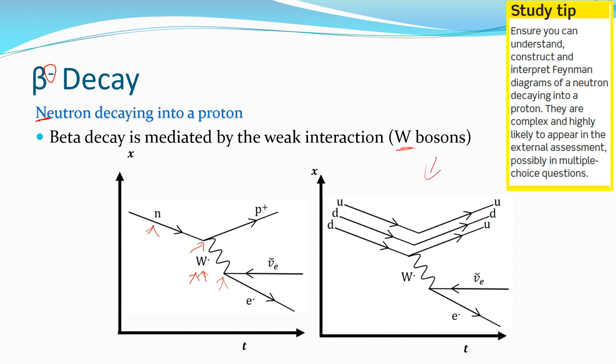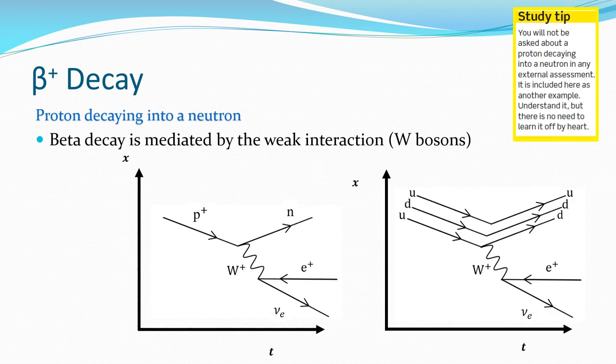And my other Feynman diagram over here just takes it a little step further, where it shows you the three quarks that come in and how they change. A neutron is an up quark and two down quarks. A proton is two ups and a down. So you can physically see that one of our down quarks has changed into an up quark. And it's the W boson, the W-negative one in particular, that helped that happen. Which then decayed into our other products of the radioactive decay.